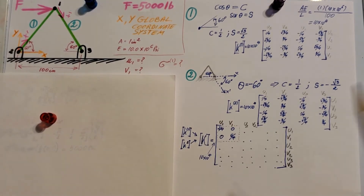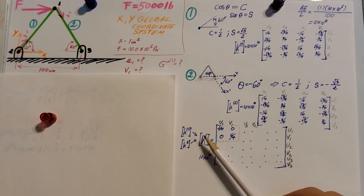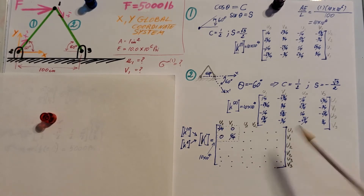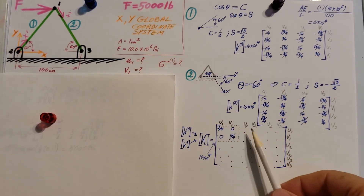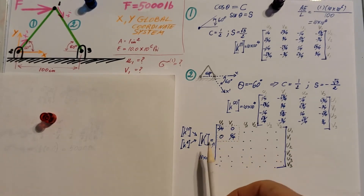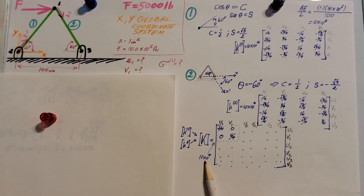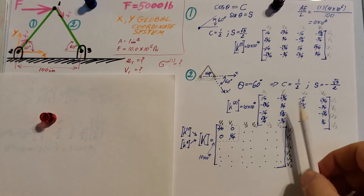Now that we have both local stiffness matrices, we are ready to create the global stiffness matrix. We take the information from element 1 and element 2 and join it into our global stiffness matrix K. The column and row labels are u1, v1, u2, v2, u3, v3. Make sure not to forget the AE over L factor — I marked it separately so it doesn't get lost. Filling this complex matrix with all the transferred information takes a lot of time.